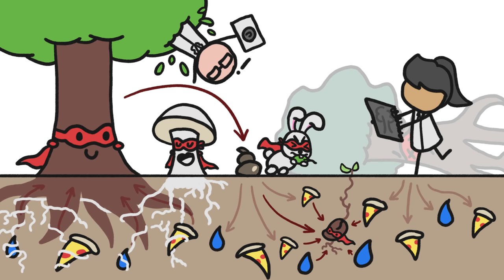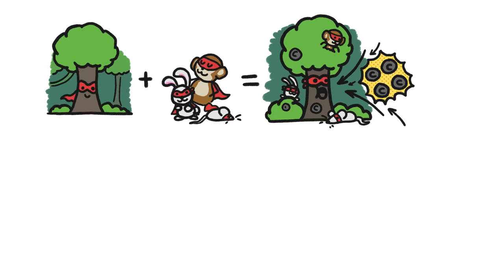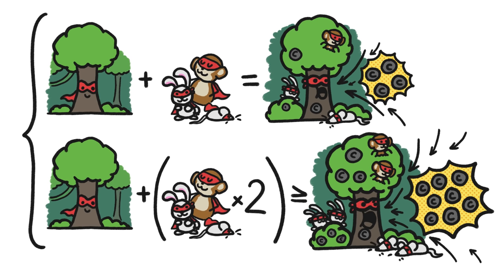We're still working to measure the impacts of these sidekicks and how they differ across ecosystems, but we know they can have big effects. One study found that doubling the number of mammal species in a tropical forest can more than double the amount of carbon stored in its trees.